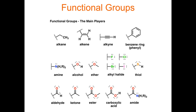Thiols are like alcohols with an OH, except they have an SH. And there are lots of groups that contain the carbonyl functional group — a carbon double bonded to an oxygen. They're different because of what's on either side. They all have the carbonyl in common, but one has an H on the side, one has a carbon (CH3), one has an oxygen and then a CH3, one has an oxygen and a hydrogen, and one has a nitrogen. These are all different functional groups because of slight differences in the bonding pattern.